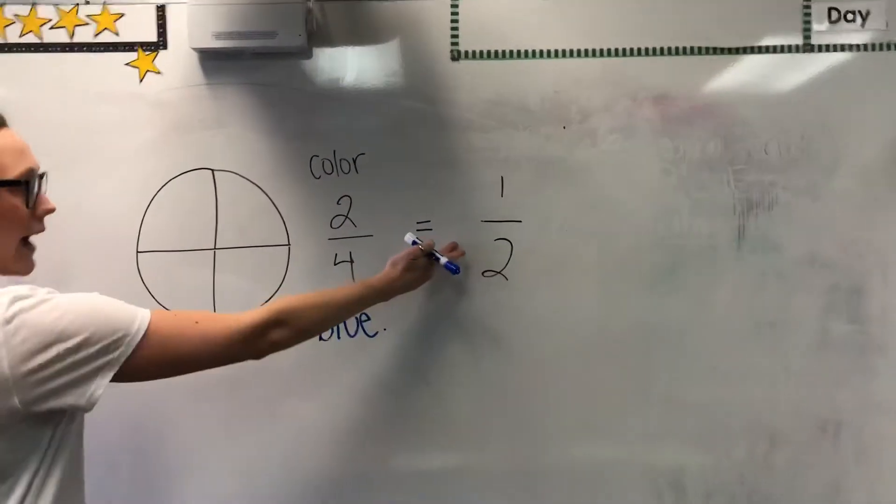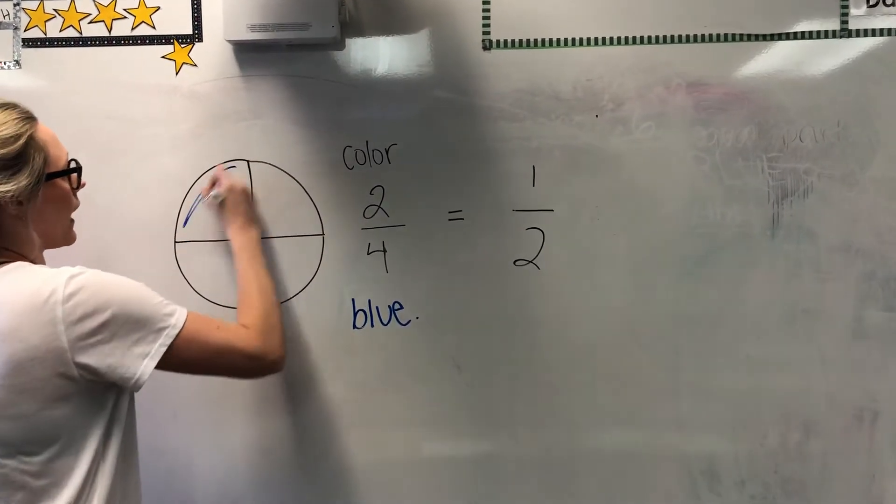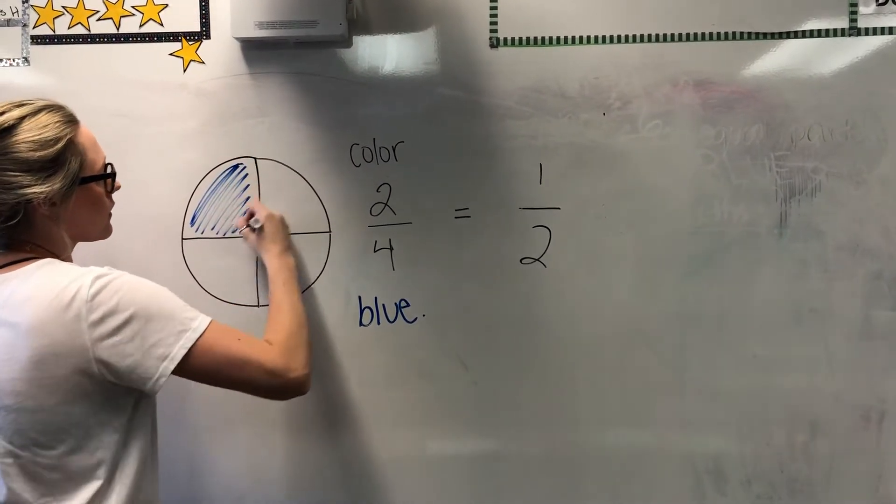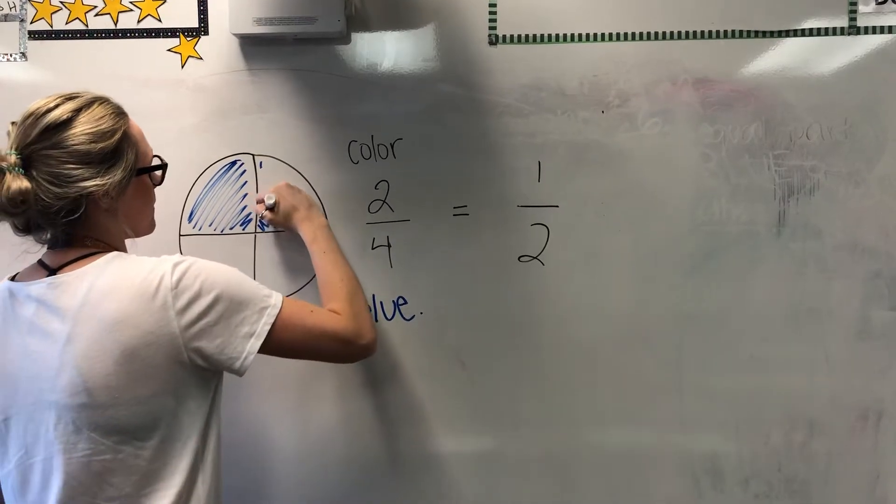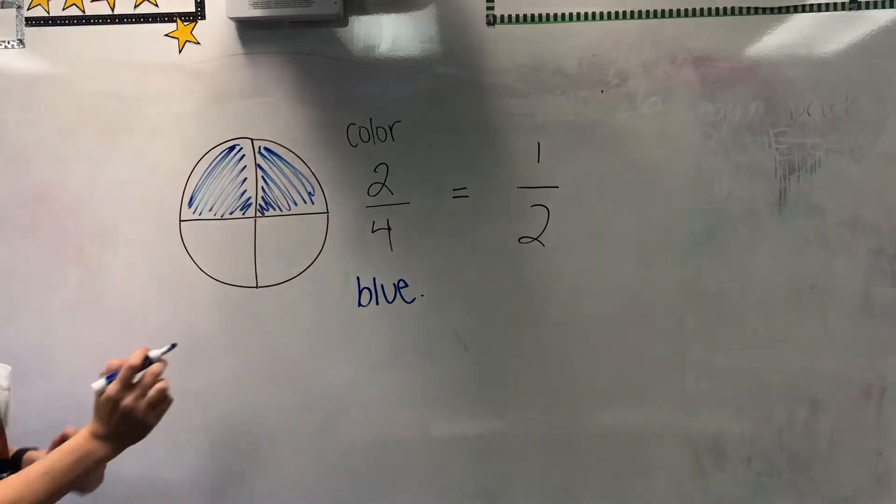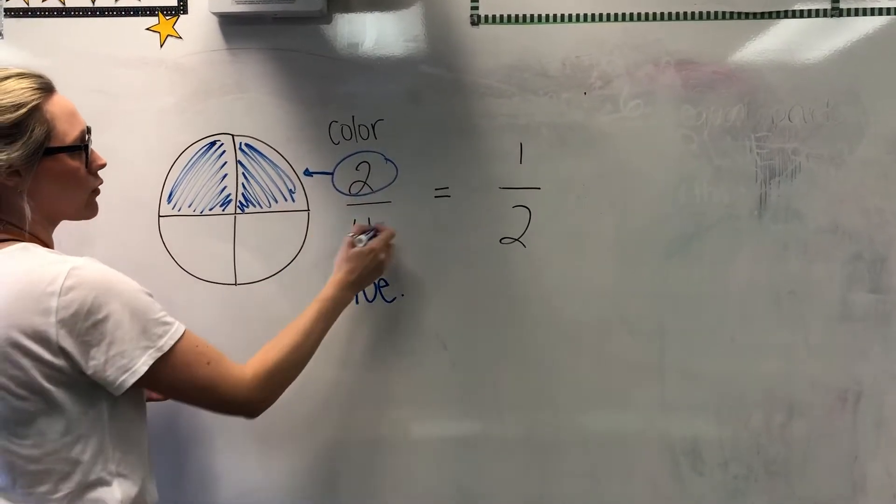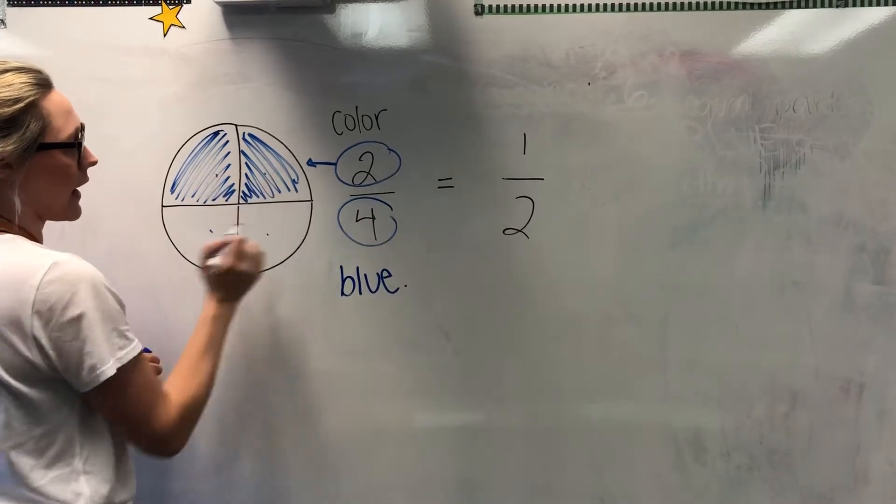So it's asking for one-half, but there's actually four parts. So if I colored one-half of the circle, see how I colored half of my circle? It's actually two colored parts is my numerator out of the four parts that I had.